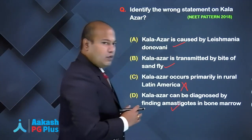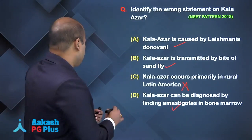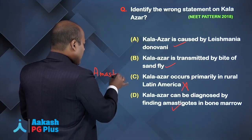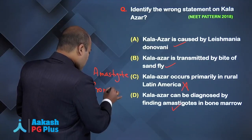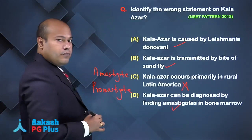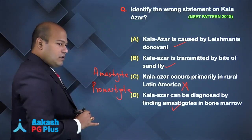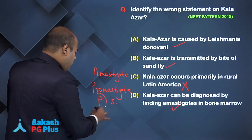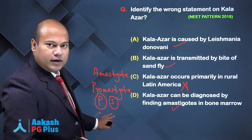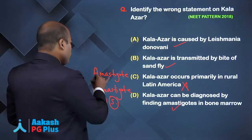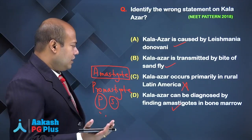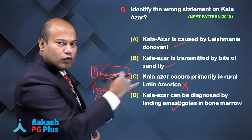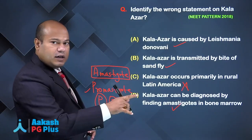Leishmania has two forms: amastigote and promastigote. Remember 'PS' — Police Station — P for promastigote found in sandfly, S for sandfly. In the sandfly, you find the promastigote form. When the sandfly bites a human, it injects promastigotes into the human, and inside the human, promastigotes are converted to amastigotes.